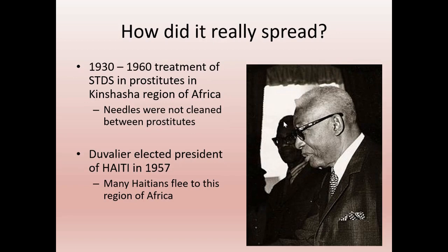What we now understand is two things amplified the virus and changed its R-naught. From 1930 to 1960, Kinshasa had a big mining community with a large prostitution trade. To treat STDs in this region, they were filling giant syringes with antibiotics and lining people up on the street using the same syringe without cleaning it. At the time, we didn't know that dirty needles could transmit microscopic viruses. That was the first amplification.